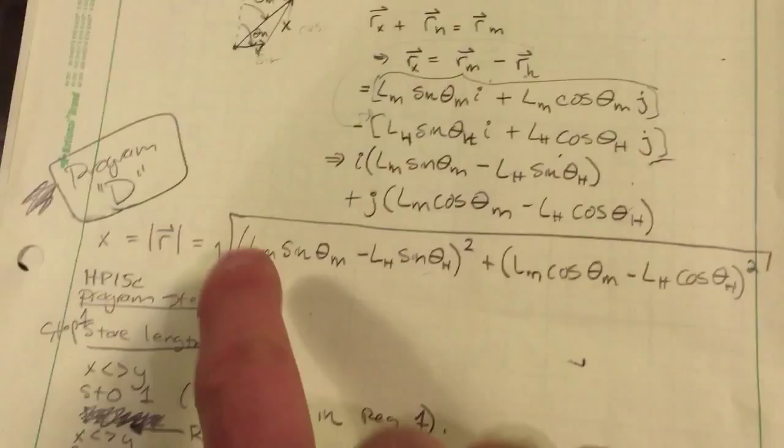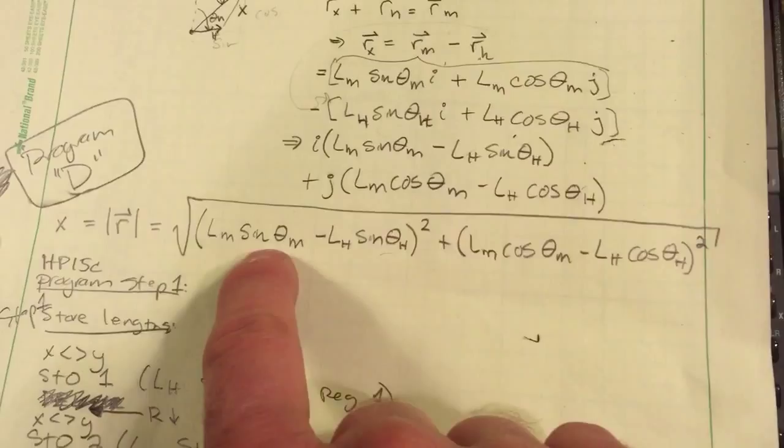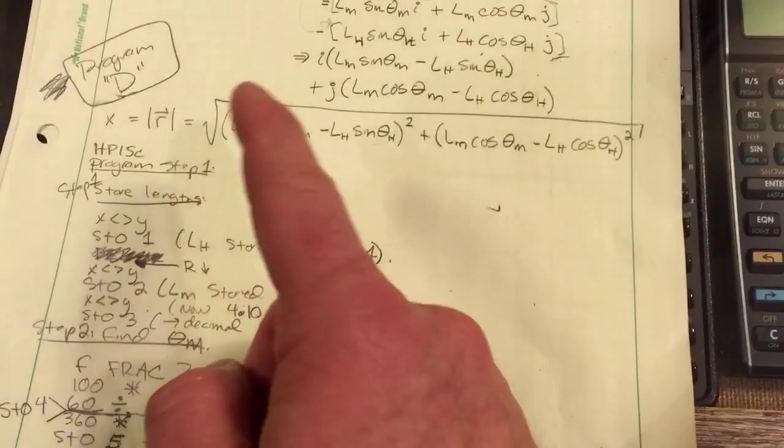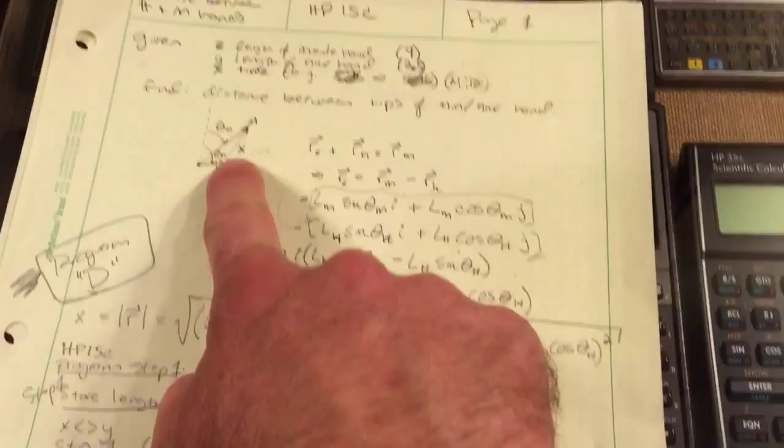You can figure out all this stuff. Back solve. And then the distance here is right there. That's the formula. Now, the program uses the fractional value and the integer value of the time that you enter. Calculates what percentage through the sweep it is and therefore what percent of 360 degrees it is. That's how it figures out the angles. And then plugs it into the vector math.